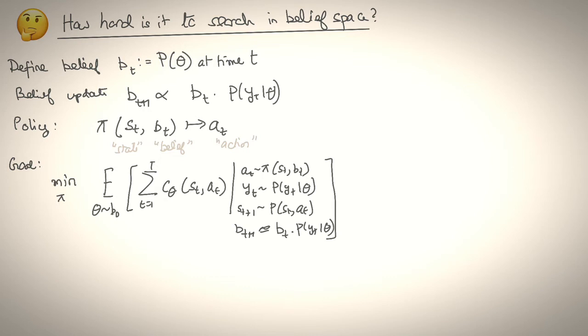The goal is to find a policy pi that incurs the minimum cumulative cost C(theta, s_t, a_t), where theta is drawn from the belief B_t and updated based on observations that are received. So, actions are drawn from pi, observations are received from the observation model, states evolve according to dynamics, and belief evolves according to the belief dynamics function. Now, this might be a lot to unpack. So, let's walk through our example.